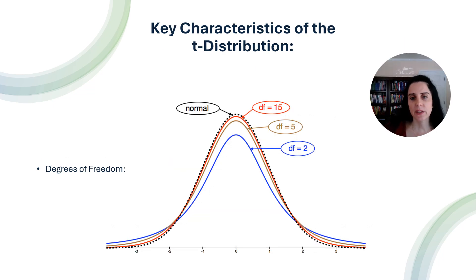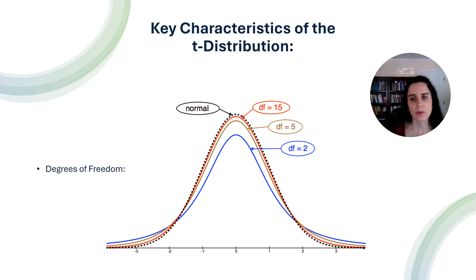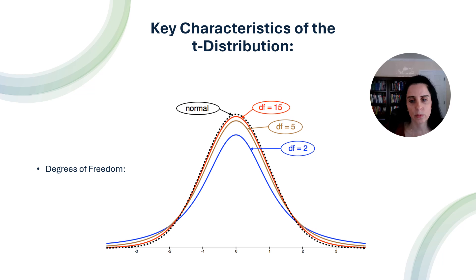The shape of the T-distribution depends on the degrees of freedom, noted as DF. Degrees of freedom typically equal the sample size minus 1 for the T-distribution. As the degrees of freedom increase, the T-distribution approaches the normal distribution. For example, with a very large sample size, the T-distribution becomes nearly indistinguishable from the normal distribution. The image on this slide illustrates the changes in the shape of the T-distribution as sample size increases.